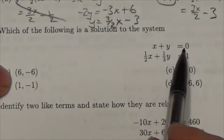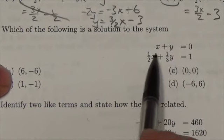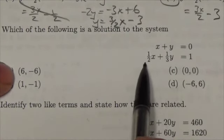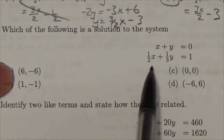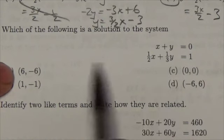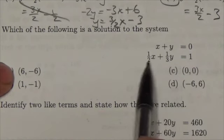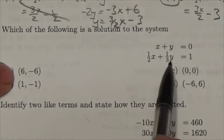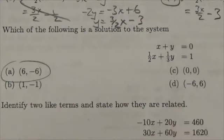Plug in 6 and negative 6. Oh, I get 0. Half of 6 is going to be 3. A third of negative 6 is negative 2. 3 and negative 2 is 1. There it is. The answer is A.